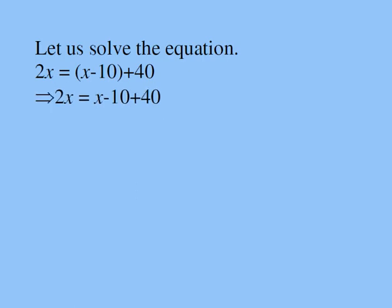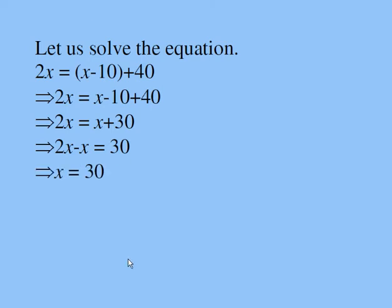We will solve it. First, we remove the parentheses around x minus 10. Now, we subtract 10 from 40. We got x plus 30 on the right-hand side. On the left-hand side, I still have 2x. I moved x here, so I have 2x minus x here and 30 over here. Then I subtracted x from 2x and got x equals 30.